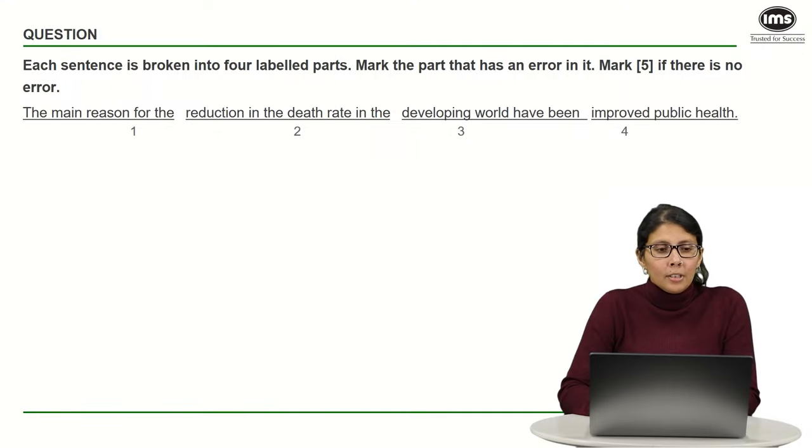Take a look at this question. Each sentence is broken into four labeled parts. Mark the part that has an error in it. It is also possible that the sentence is perfect, that there is no error, in which case you should mark five. Read this sentence as a whole and see if you can find any error in it. Did you manage to see anything?